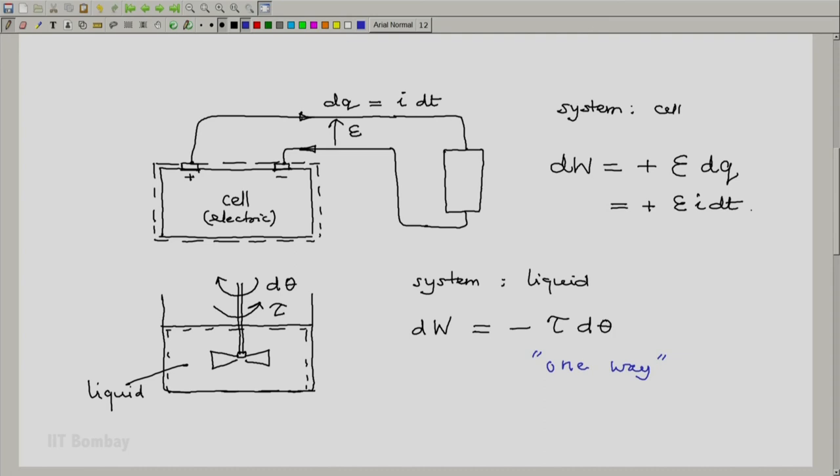Whereas, I can connect this to a charger to charge it, in which case the current will be in the opposite direction. But the direction of the potential will remain the same. So DQ will be negative, E will be positive, so work done by the system will be negative. So if it is a rechargeable cell, charging and discharging is a two-way work mode.